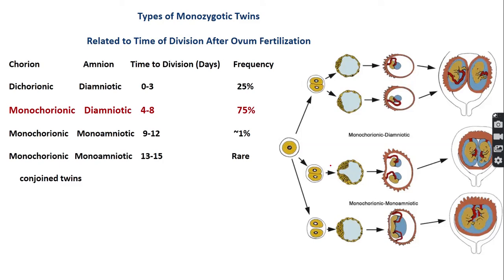How does monochorionic diamniotic twin pregnancy occur? When the zygote divides vertically, it produces a single blastocyst but two inner cell masses. These two inner cell masses are well separated, so they produce two amnions and two yolk sac cavities, resulting in monochorionic diamniotic twin pregnancy.